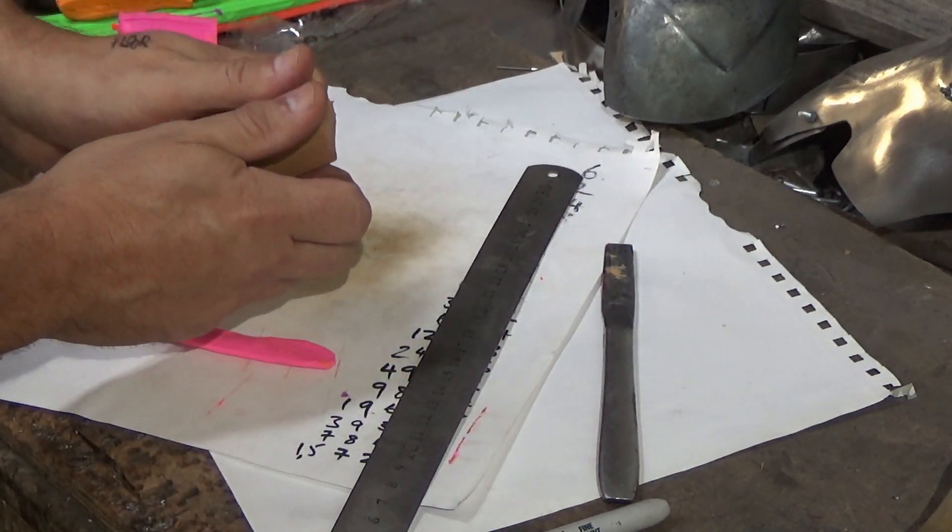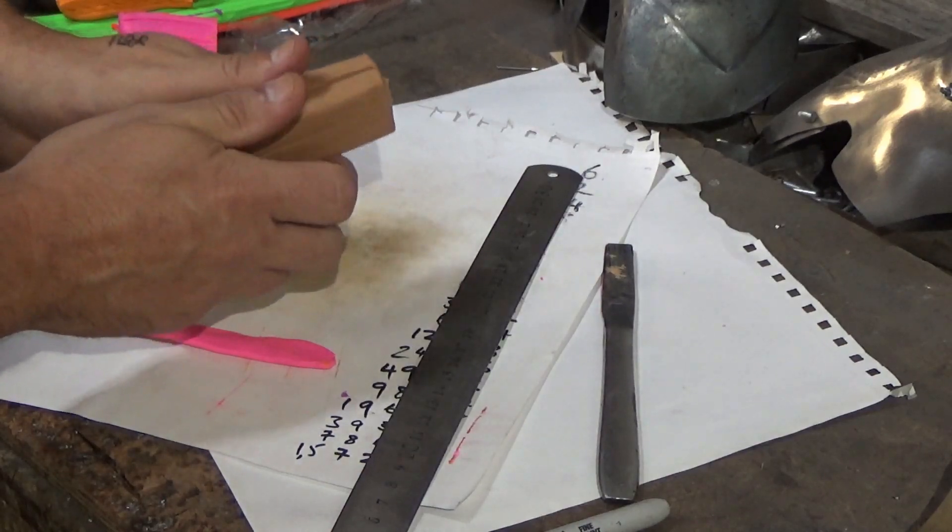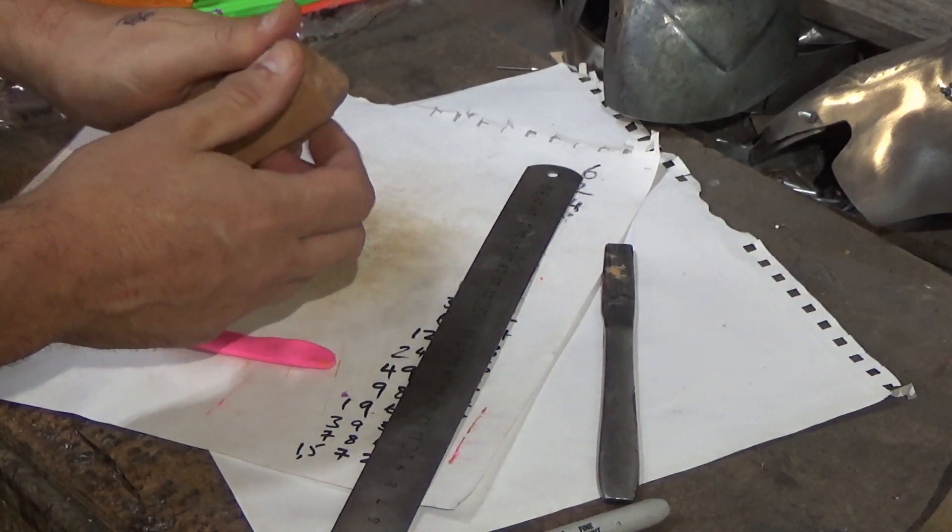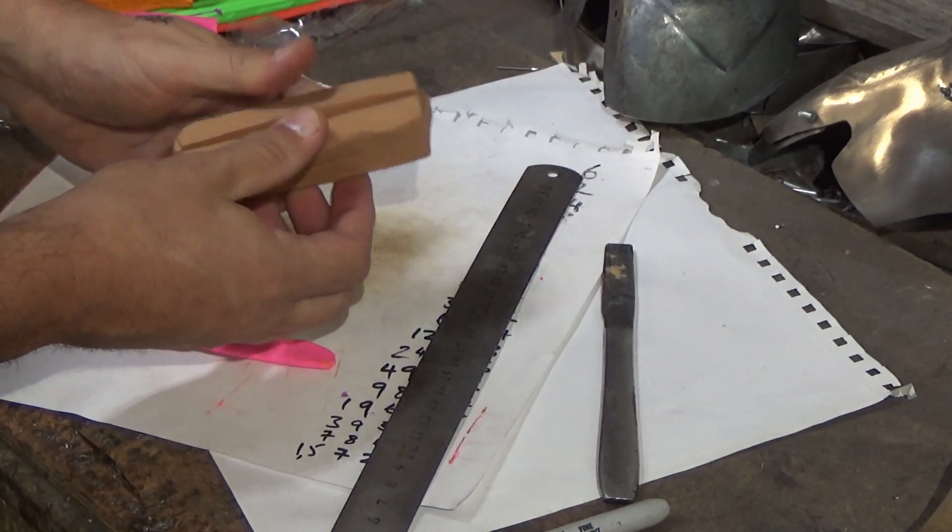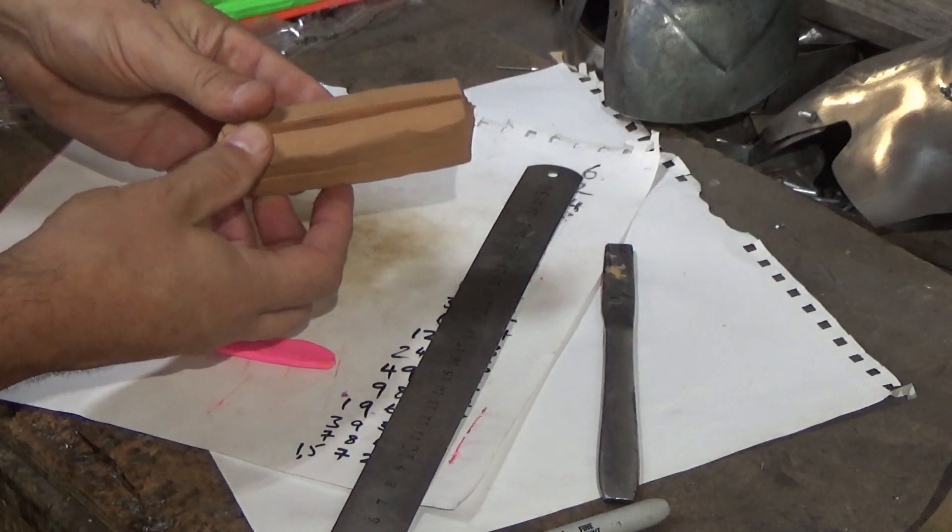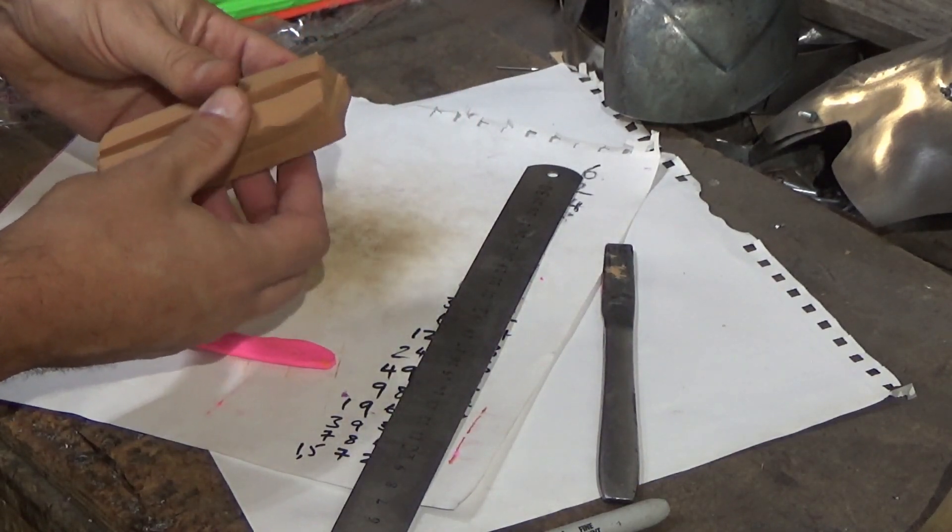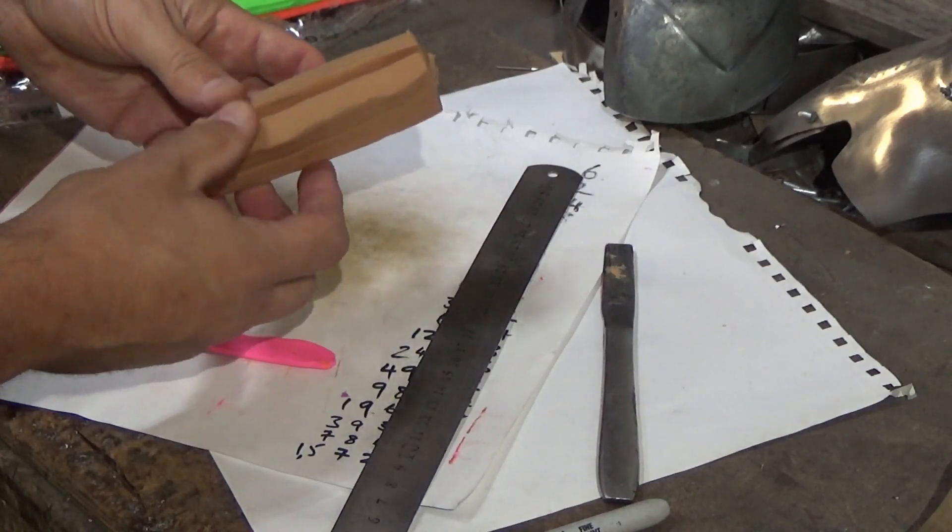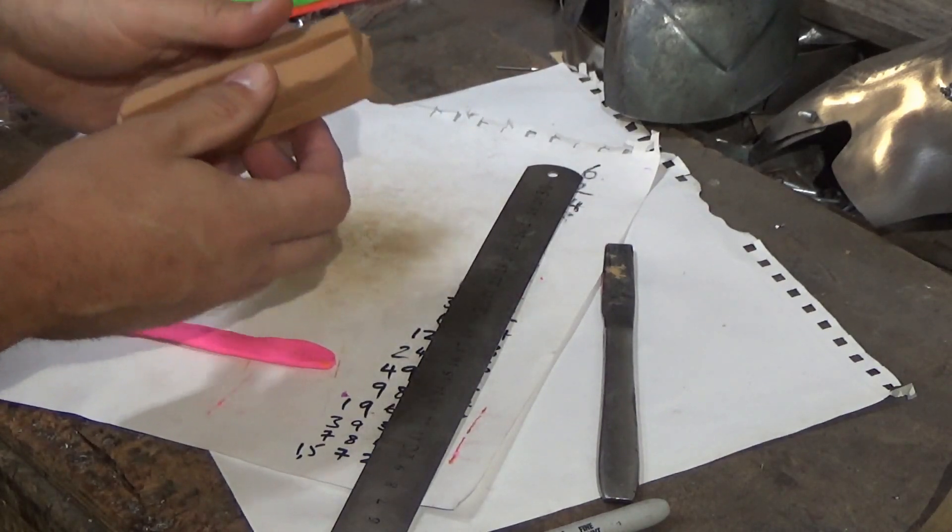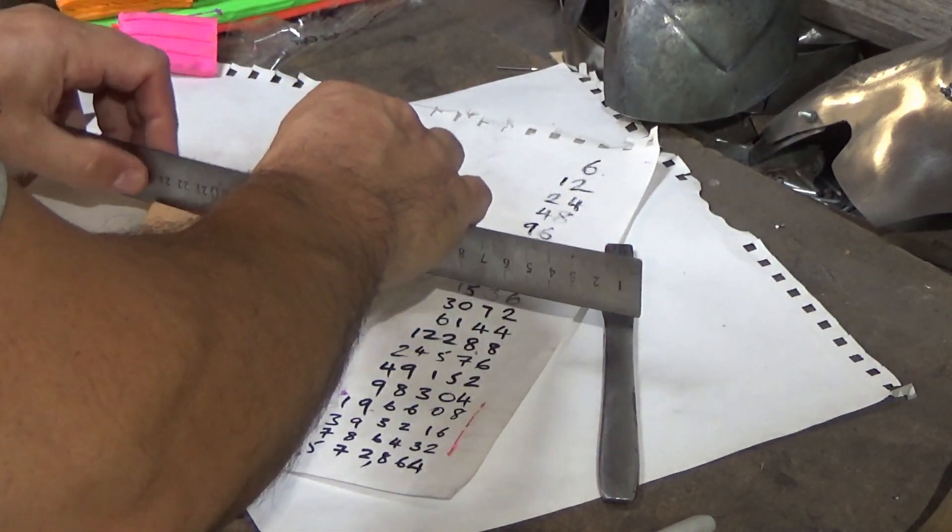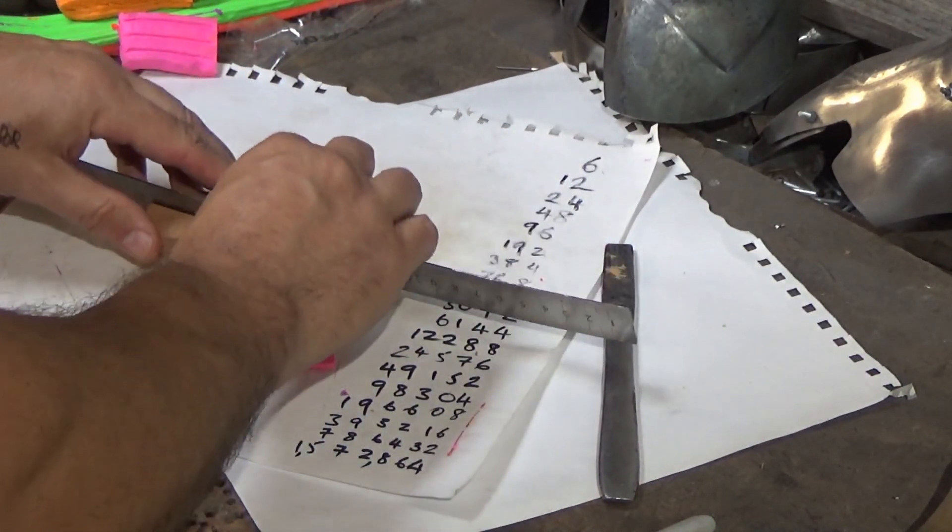And again this is why I say plasticine is so useful, particularly for fledgling blacksmiths with no equipment. You can learn the principles of a process long before having to learn how to hit the metal and hold it when it's hot and so on. You can just get to grips with so much.